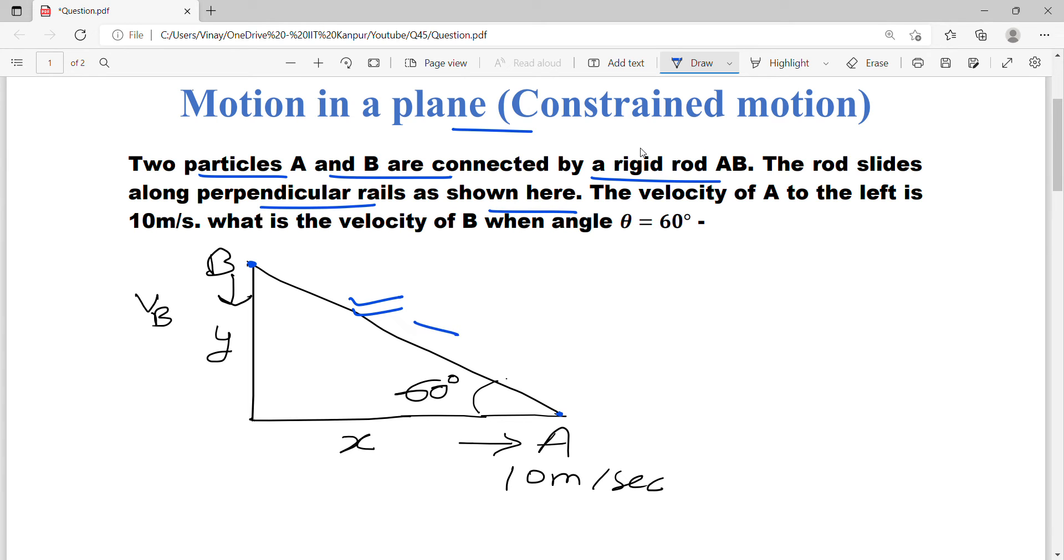If A of the rod goes in this direction and it is given that it is 10 meters per second, then you must find out what will be the velocity of B. If these are perpendicular rails as shown here, this is fixed. If A is fixed, then B in this direction is fixed. If A is fixed in the direction of the position of the distance, it will go in this direction.